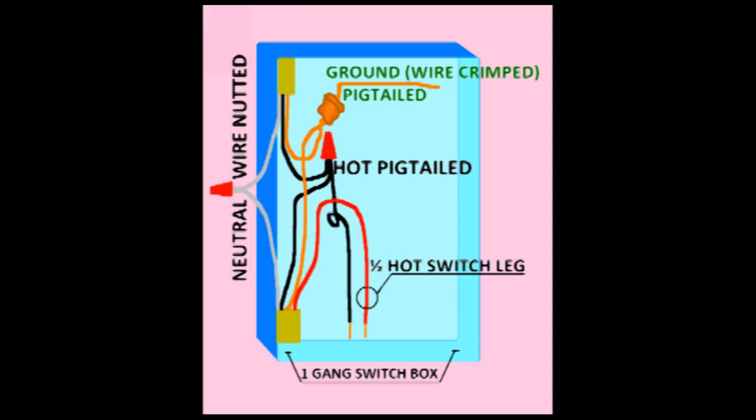Note in this diagram that the black wire is pigtailed and the white wire is wire netted together. The ground wire is pigtailed using a copper ground crimp and that leaves your red wire from the 12-3 to be used as a switch leg.